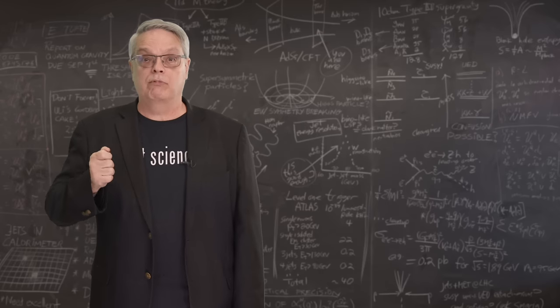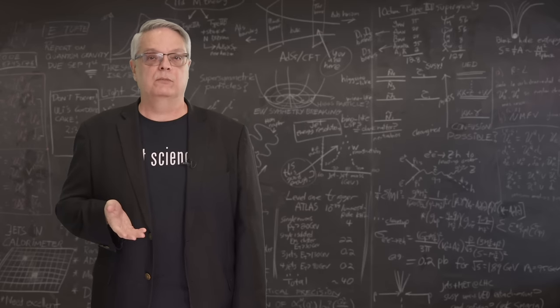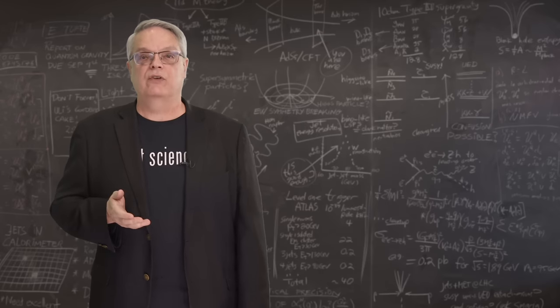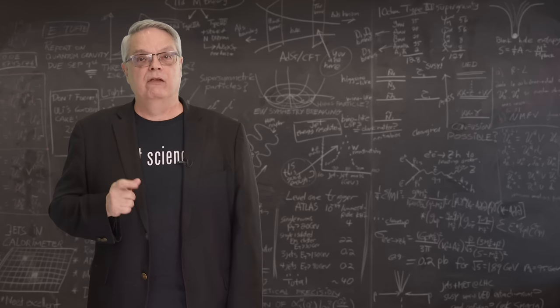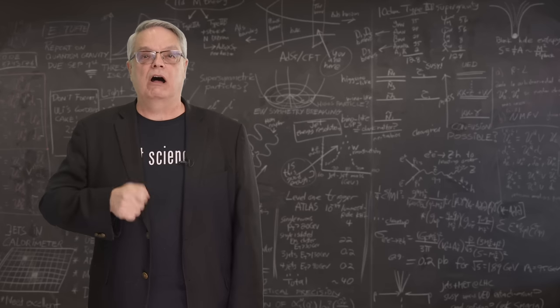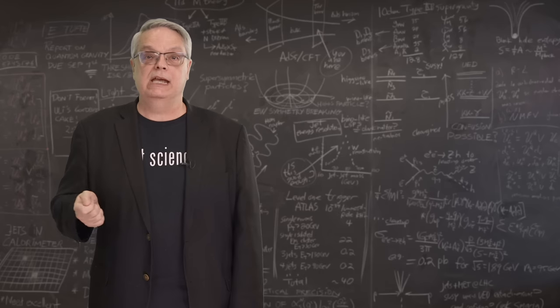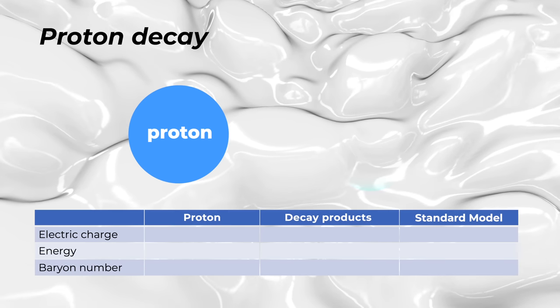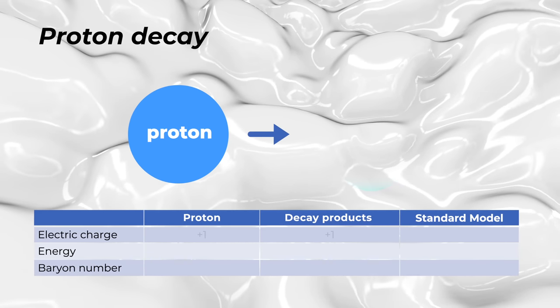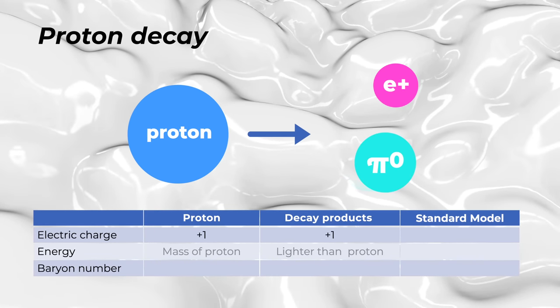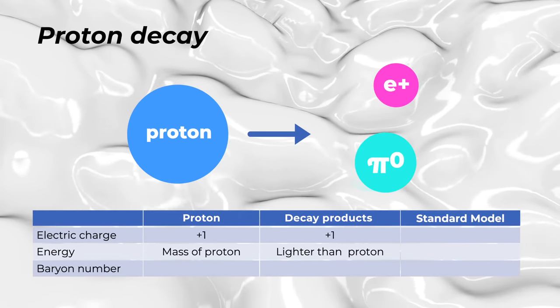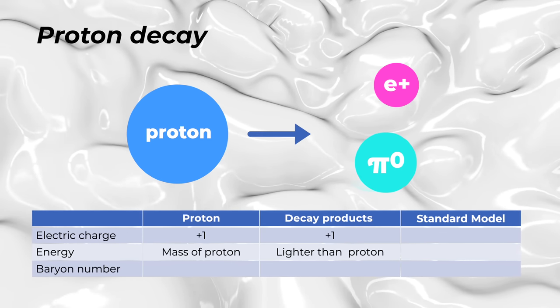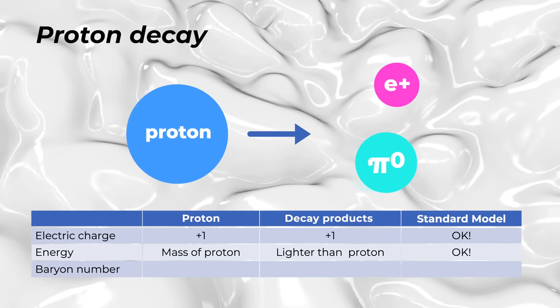However, in some proposed replacements of the standard model, some of those conservation laws are relaxed. For example, these models often say that a proton could decay into a positron and a pi meson. We see that in this decay that charge is conserved and the mass of the particles after the decay is smaller than before, so the decay is okay on charge and energy grounds.